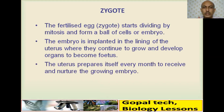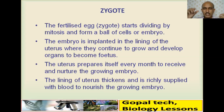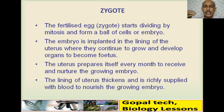The uterus prepares itself every month to receive and nurture the growing embryo. The endometrium thickens and is richly supplied with blood, because that blood carries nutrients and oxygen to nourish the growing embryo — essentially, whatever the mother eats is transported to the fetus through the blood.